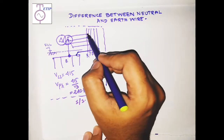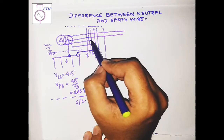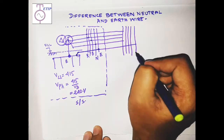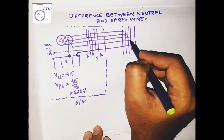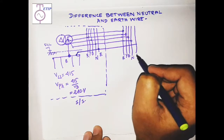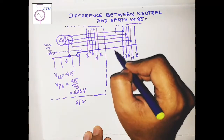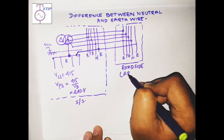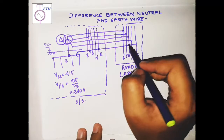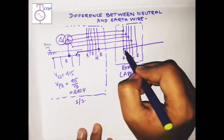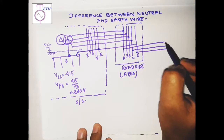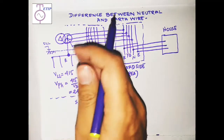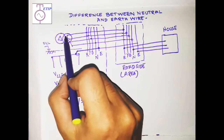From the substation, lines are taken to your roadside switchboards. The roadside switchboard has R, Y, B, neutral, and an earth bus. From this area switchboard, you receive three lines — one phase R, one neutral, and one earth — and these three are given to your house premises. This is how power reaches the household from the substation.